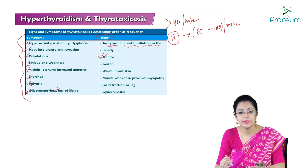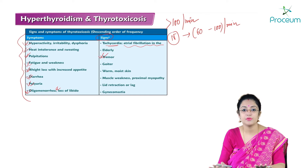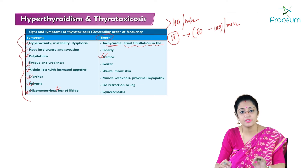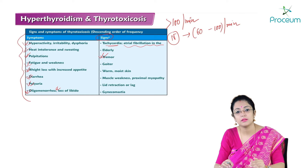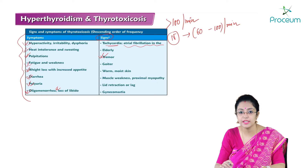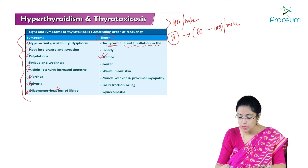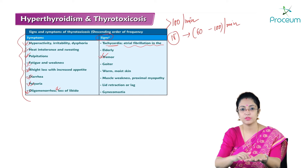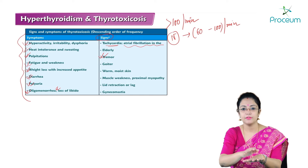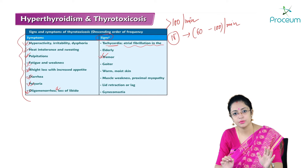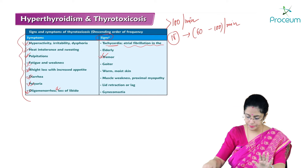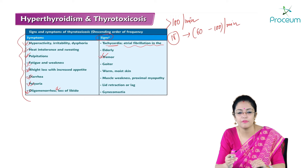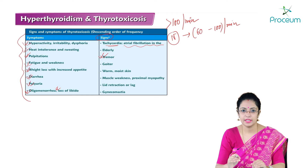Another sign is fine tremors, mainly in the hands. When examining a patient, fine tremors may not be obvious. To detect them, we can keep a piece of paper over the patient's outstretched hand — if the paper trembles, fine tremor is present. This is how we clinically identify fine tremors in hyperthyroidism.